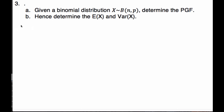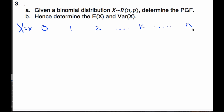If I think about what the distribution means for binomial, I could have zero successes out of n trials, or one success, or two successes, all the way up to k successes, and finally up to n successes.